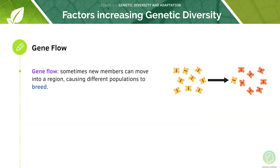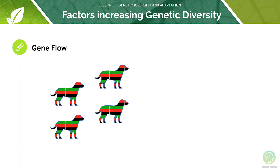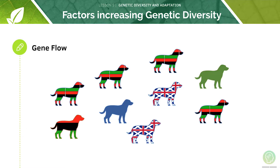Gene flow is when members move into a new region, leading to breeding between different populations. For example, if you added many British dogs to an environment of African dogs, the genetic diversity in the African population would rise, as shown here.